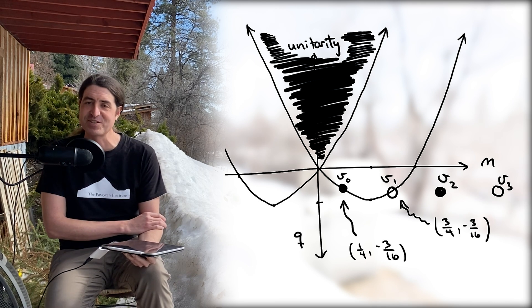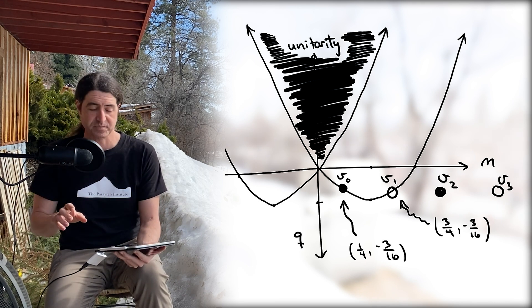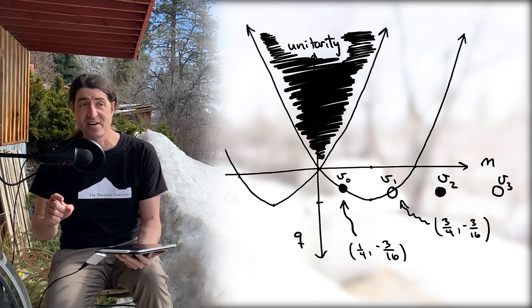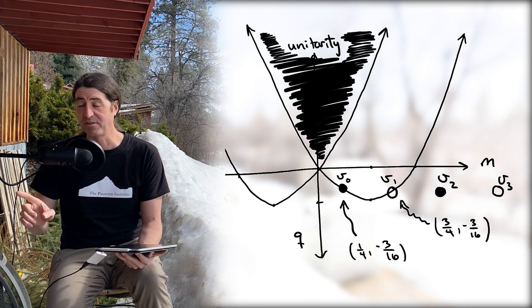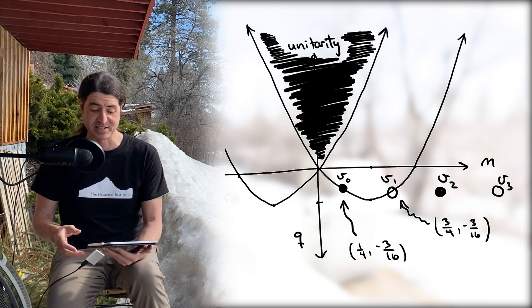This explains why they terminate on the left-hand side, but on the other hand it's really interesting because especially consider the even modes—they actually hop over the unitary region on their way out to infinity for the other states.